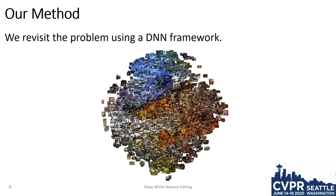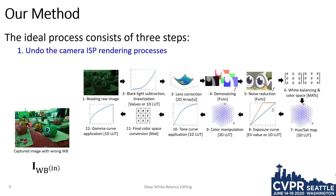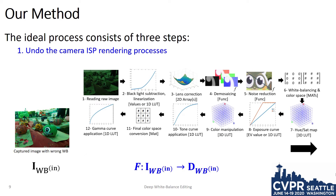This year, we have revisited the problem using a deep neural network framework. To understand our new framework, we begin by examining an ideal procedure to change the white balance in a camera rendered image. Ideally, we would first like to undo the camera's processing to get back to the un-white-balanced raw image. We will refer to this un-processing or de-rendering with the function F.